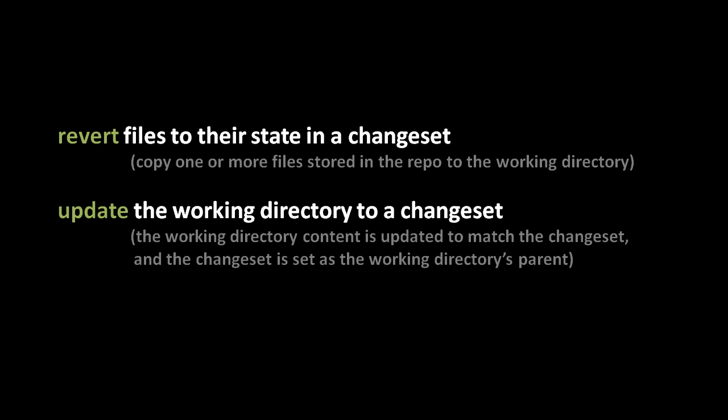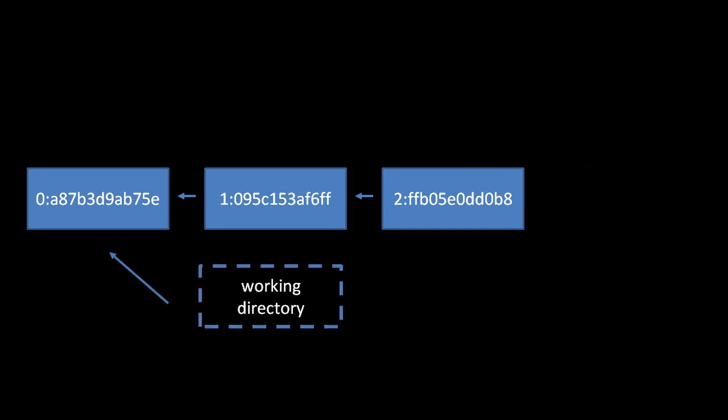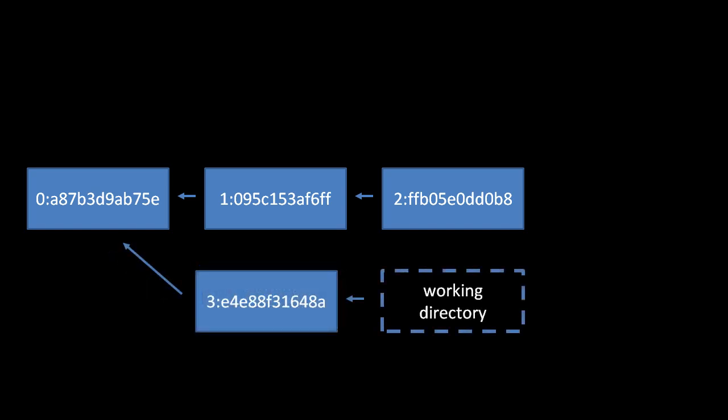The purpose of the update command is quite different. With update, we're generally bringing the entire working directory in line with some previous revision — putting everything into the state it was in for a specified change set. Very importantly, the change set to which we are updating becomes the parent of the working directory. This is the primary command by which we modify the parent of the working directory. Anytime we want to go back to an old revision and make a branch, we first do an update, then make modifications and commit, creating a new head — effectively a new branch.